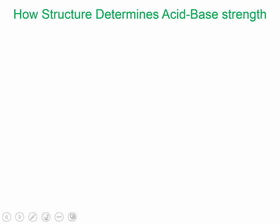In this video, we'll be going over how the structure of an acid can determine its strength. We'll be looking at two types of acids: oxyacids, which have oxygens on them, and halogen acids.